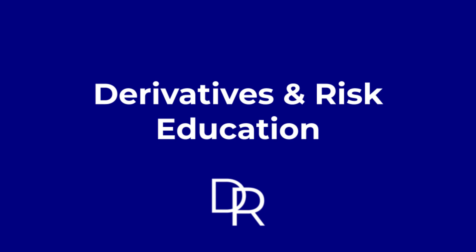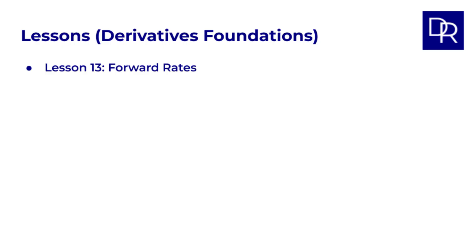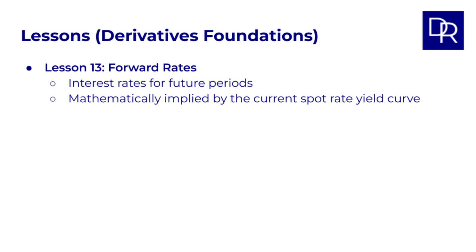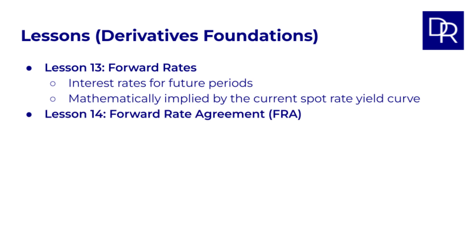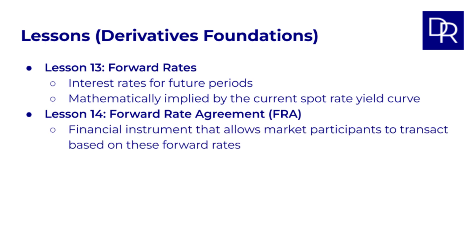Hello and welcome back to Derivatives and Risk Education. In our previous lesson, number 13 in the Derivatives Foundations course, we explored forward rates. We learned that these are interest rates for future periods that are mathematically implied by the current spot rate yield curve through the powerful principle of no arbitrage. Today in lesson 14 we are going to look at the Forward Rate Agreement or FRA, which is a key financial instrument that allows market participants to transact based on these forward rates.